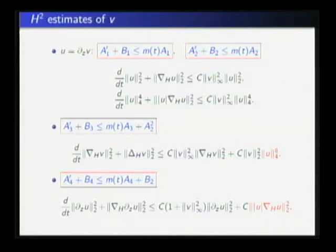So next, H2 of V. As I mentioned before, we use an anisotropic treatment on the derivatives. We always do the z derivative first and then the horizontal derivative. So first, D_z V, that is U, satisfies these two inequalities - L2 and L4 estimates. Simply, these two inequalities.